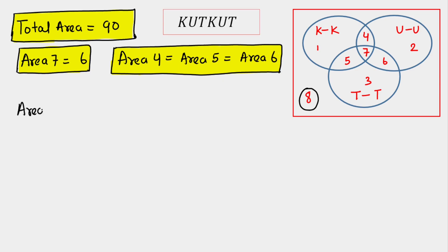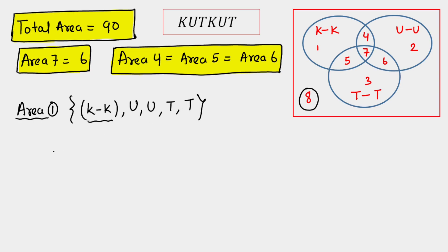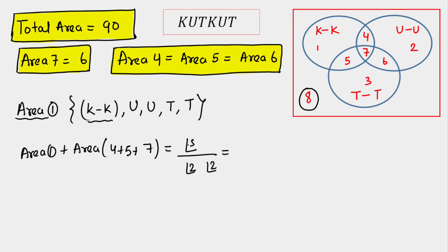Now for area 1, where only KK are together and UU, TT are free. Treating KK as one unit gives 5 elements with UU and TT each repeated twice: 5! / (2! × 2!) = 120 / 4 = 30. But this 30 includes areas 1, 4, 5, and 7. So area 1 = 30 − (area 4 + area 5) − area 7 = 30 − 12 − 6 = 12.